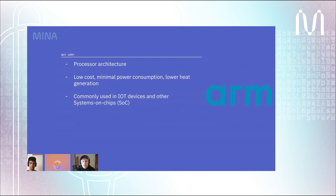Why ARM? ARM is a processor architecture that dates back about 30-plus years. Compared to the more common x86 processors used in most computers, ARM processors have a lower cost, consume less power, and produce less heat. They are very commonly found in IoT devices, as well as other SOCs. Many of you have probably heard of the Apple M1 — that's an ARM processor and a great example of the strengths of this architecture.